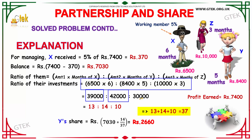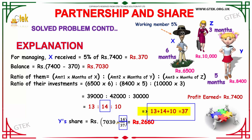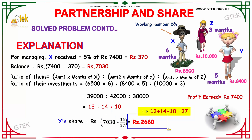Calculating: 6,500×6 = 39,000; 8,400×5 = 42,000; and 10,000×3 = 30,000. Simplifying, we get the ratio 13:14:10, with a total of 37 parts. Y's share is 14 out of 37, so Y's profit is 14 divided by 37 into Rs. 7,030, which gives Rs. 2,660. So Y's share is Rs. 2,660.